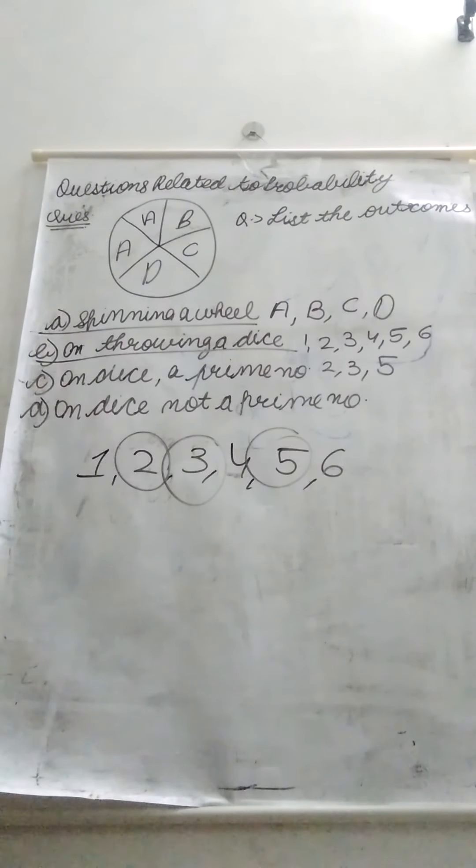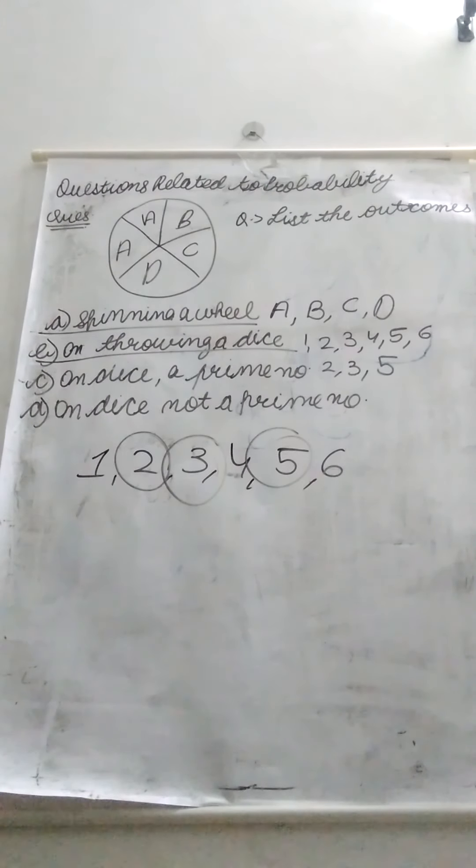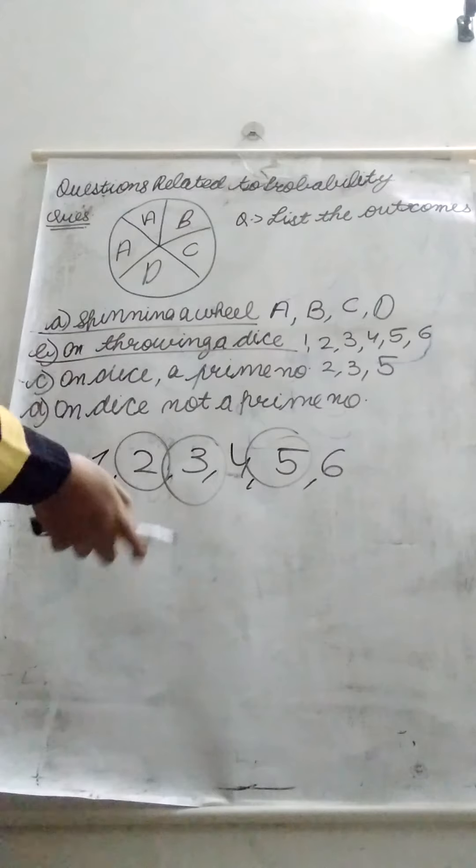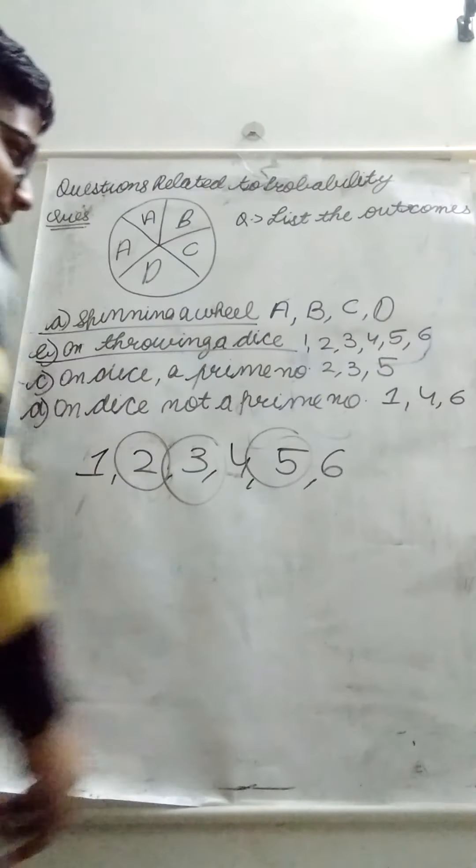On die is not a prime number. It means that a prime number is not a prime number. In other words, there are many numbers. We have to write these numbers. Now, we have not asked this about composite numbers. We have asked this about not a prime number. So, which is not a prime number? 1, 4 and 6.